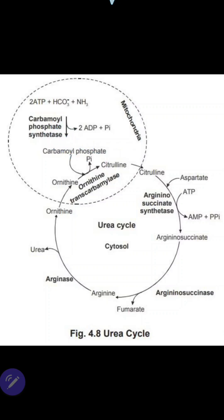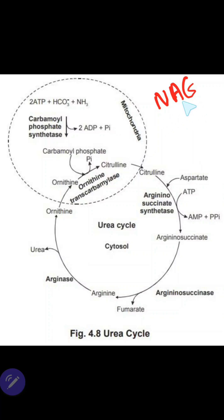CPS1 is activated by N-acetyl glutamate, which is formed by the combination of acetyl-CoA and glutamate. The level of N-acetyl glutamate will be higher when we consume more protein in the diet. This represents both the regulation of CPS1 and the regulation of the urea cycle.